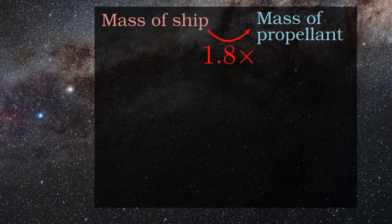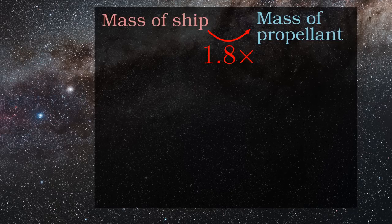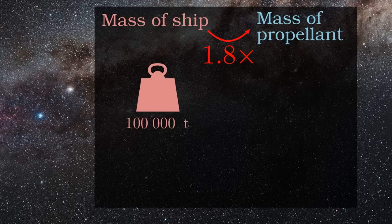With all this in mind, the ship would have to bring 1.8 units of propellant for every unit of actual ship mass for this 7 year trip to Alpha Centauri.